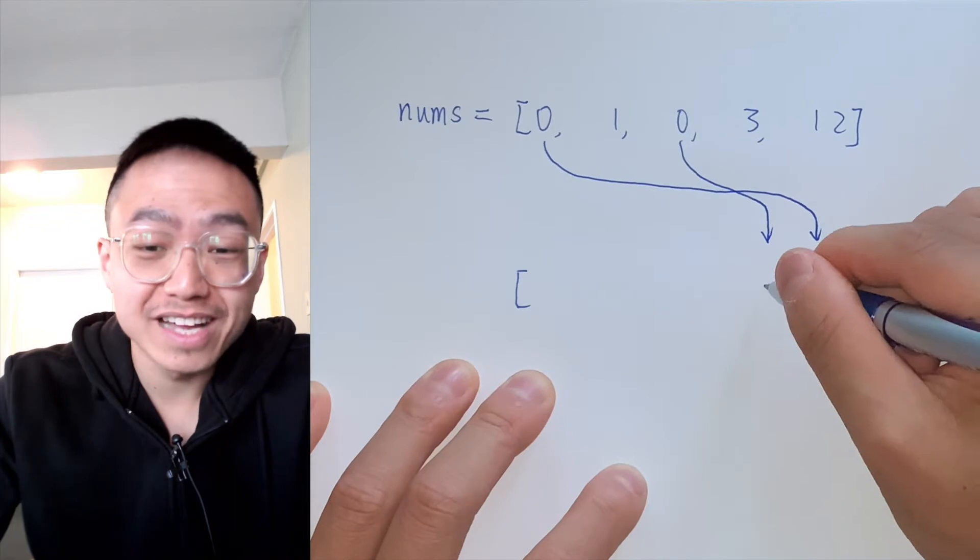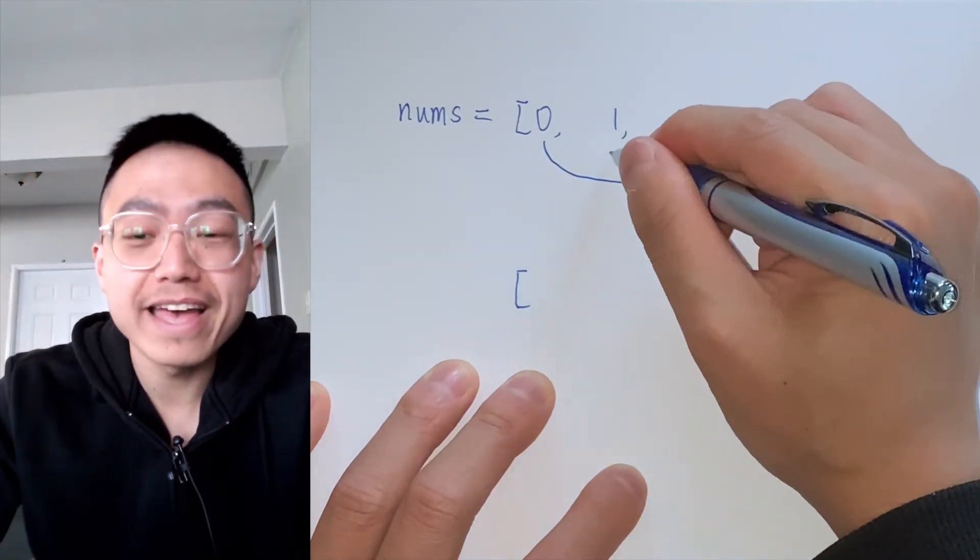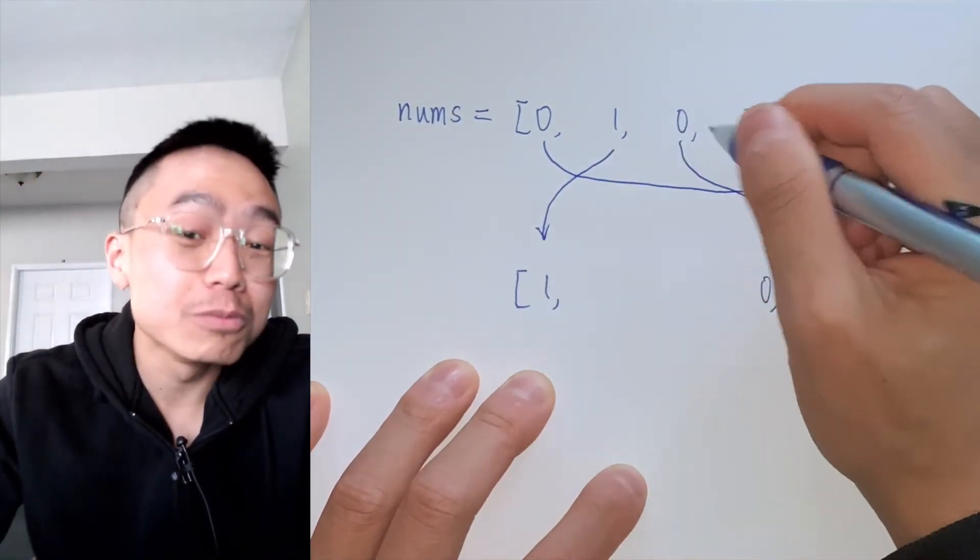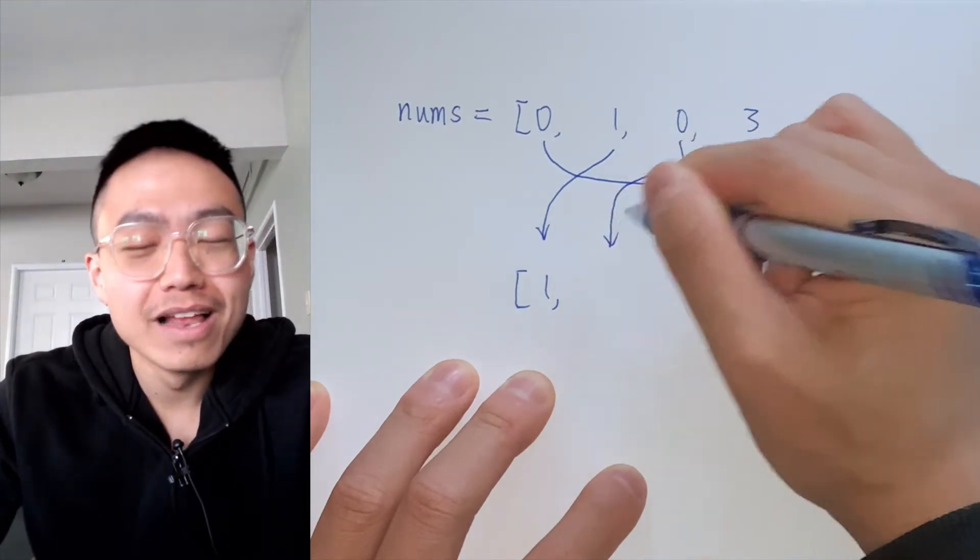In place means we shouldn't be allocating any space for an extra array, but we are allowed to modify the existing array.